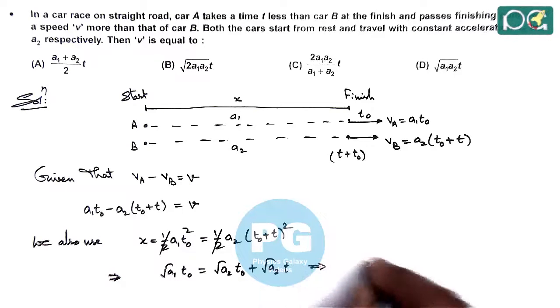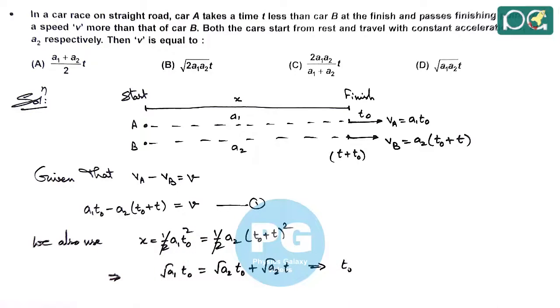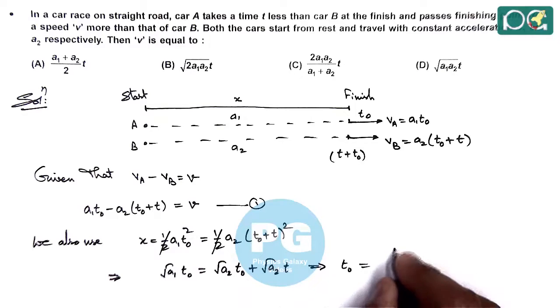It gives us a value of t naught which we can use in this equation 1. So the value of t naught we are getting is root a2 times T divided by root a1 minus root a2.